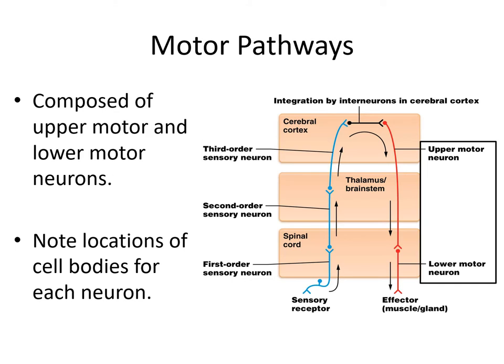Motor pathways, for some reason, are named differently. They're composed of upper motor and lower motor neurons. Recall that motor pathways are going to be descending, so the upper motor neuron comes first, followed by the lower motor neuron. One big difference is that we have two neurons in the motor pathways where we had three in the sensory pathway.